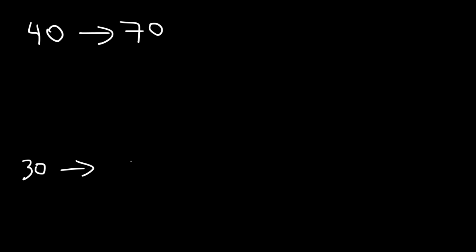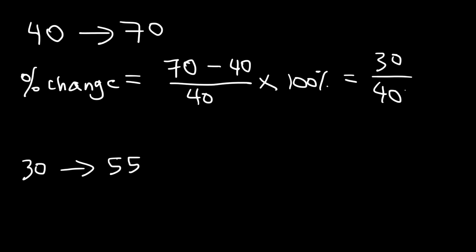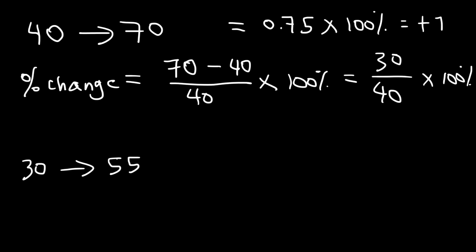Here's another example — go ahead and calculate the percent change for these two numbers. Starting with the first example, the percent change is going to be equal to the new value, which is 70, minus the original value of 40, divided by the original value, times 100%. And 30 divided by 40 is the same as 3 divided by 4, which equals 0.75. Multiply 0.75 by 100% and you get positive 75%, representing the percent change for these two numbers.